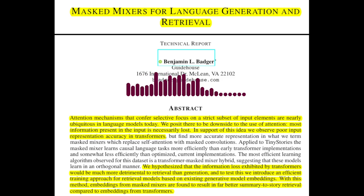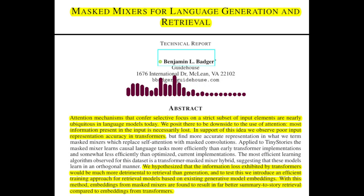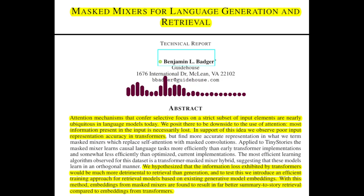Masked mixers replace self-attention with masked convolutions. These convolutions are designed to be causal, meaning they only process information from previous tokens in the sequence, ensuring that the model doesn't see future information. This causal masking allows the model to learn a more complete representation of the input, as it doesn't discard information from earlier tokens.